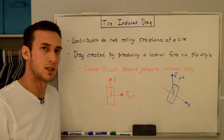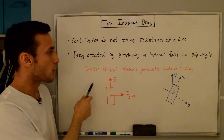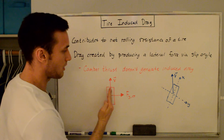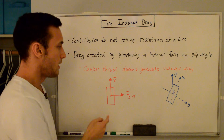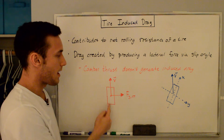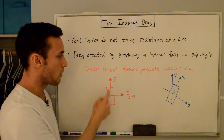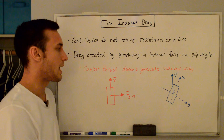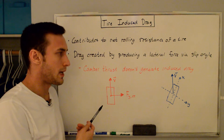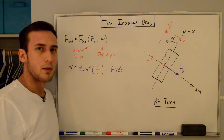If there's no slip angle, any lateral force that's produced will be perpendicular to the velocity vector. Here's an example with camber thrust: imagine we're looking at the tire top down and the tire is tilted inwards. The lateral force produced via camber thrust is perpendicular to the velocity vector, and thus does not actually produce any induced drag. Lateral forces due to camber at non-zero slip angles exist, but they're different than camber thrust itself.